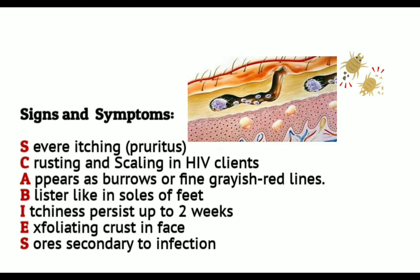For letter A — scabies appears as burrows or fine grayish-red lines in the skin. The mites burrow into the top layer of the epidermis, known as mite tunneling, where the adult female lays eggs. Eggs hatch in 3 to 4 days and develop into adult mites in 1 to 2 weeks. After 4 to 6 weeks, the patient develops an allergic reaction to mite proteins and feces in the burrows, causing intense itch and rashes. Most individuals are infected with only 10 to 15 mites.